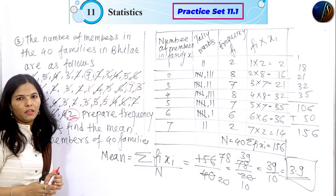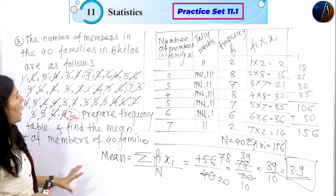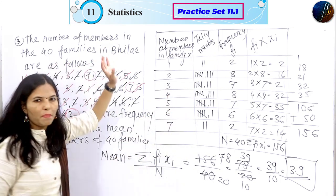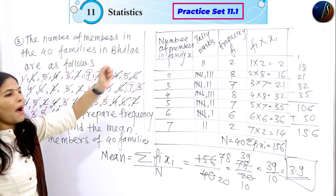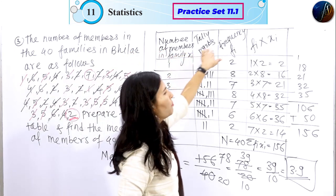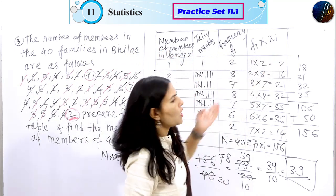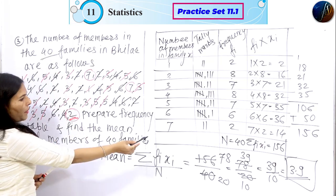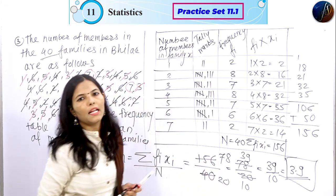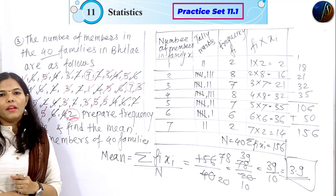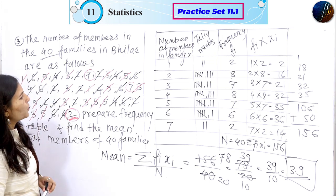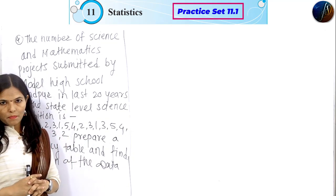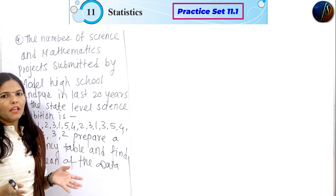The mean is 3.9 — that is a 4-mark answer, free of cost marks. So students, question number 3 of practice 11.1 is clear. Let's see the last example of this practice. This is the last example in your practice 11.1. It's very important — you have 4 marks in the exam. It's simple; you can also solve it.